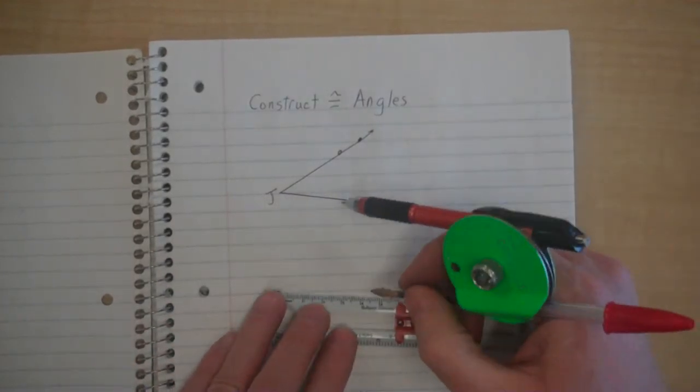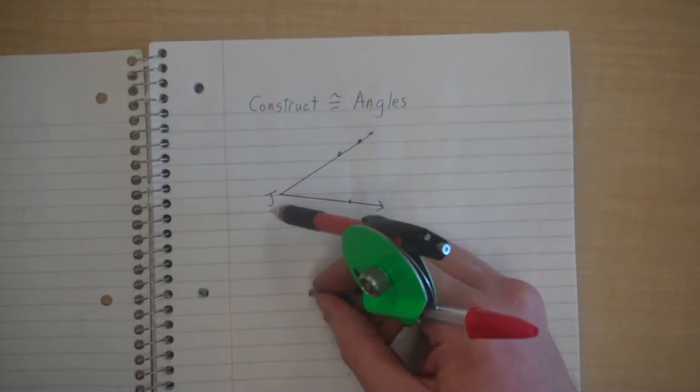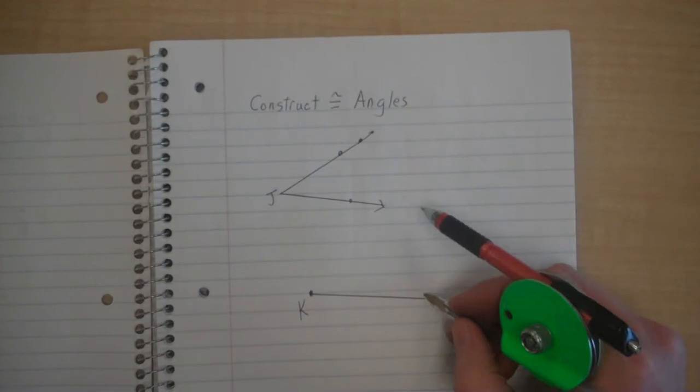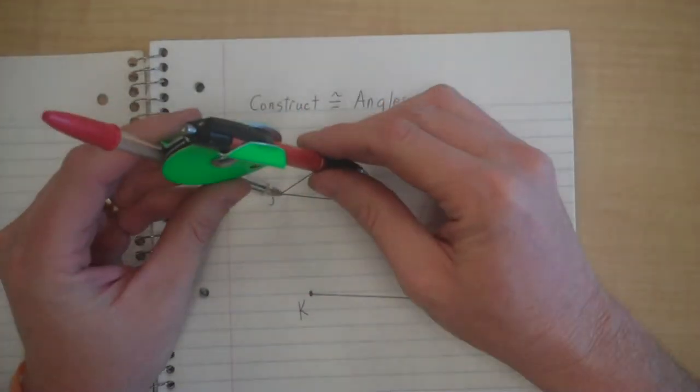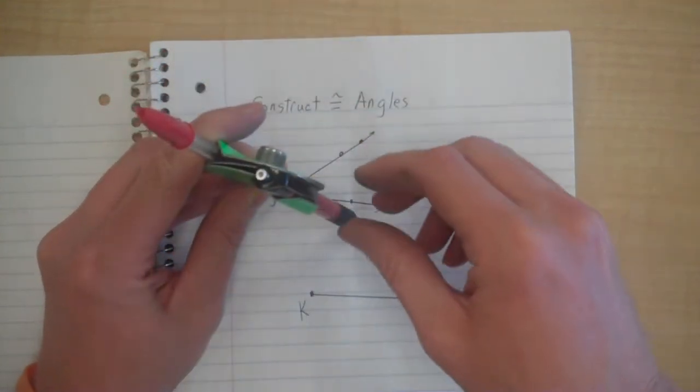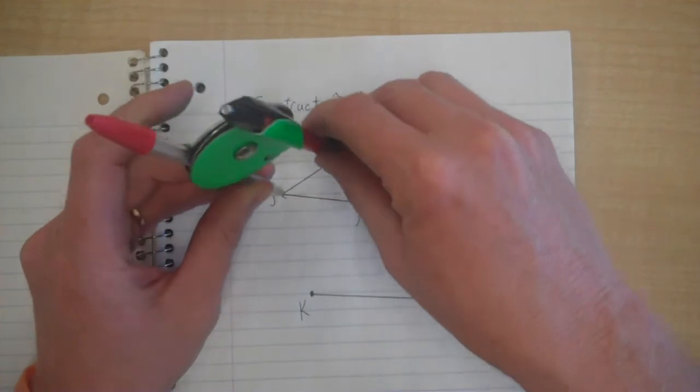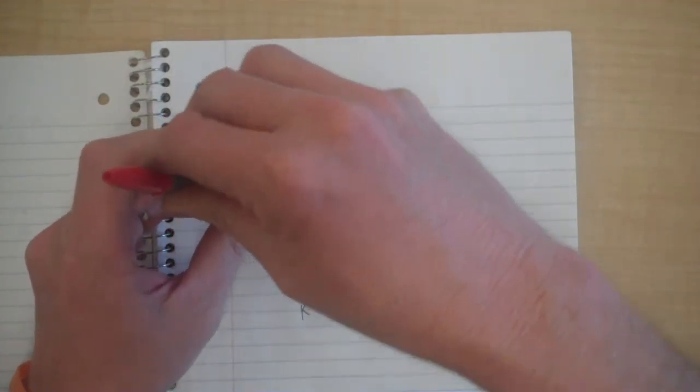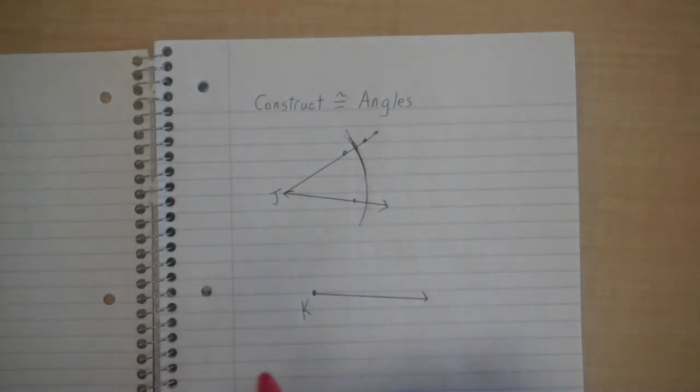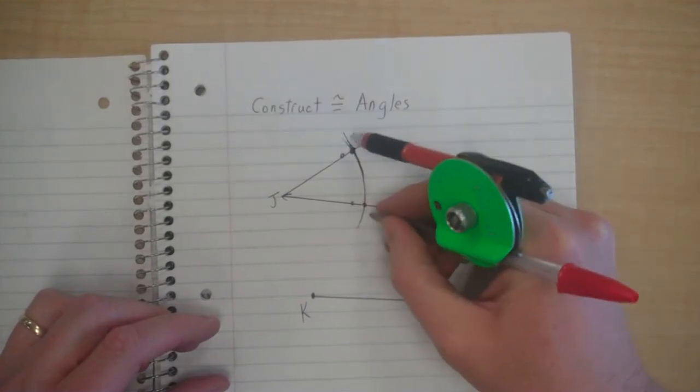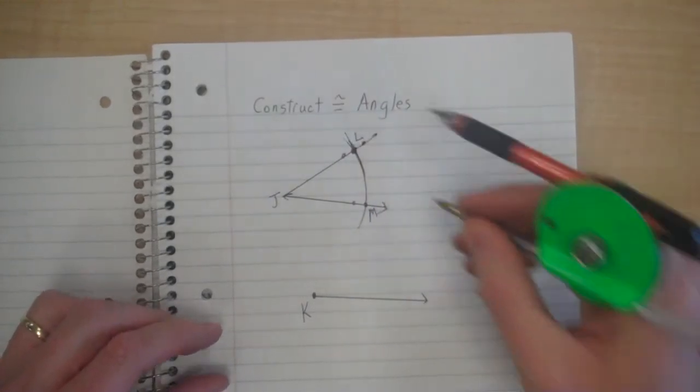I'm going to put my pivot point on J. I need to draw an arc that hits both sides of the angle. Let me call that L and M. I wanted to wait until now to name those points.